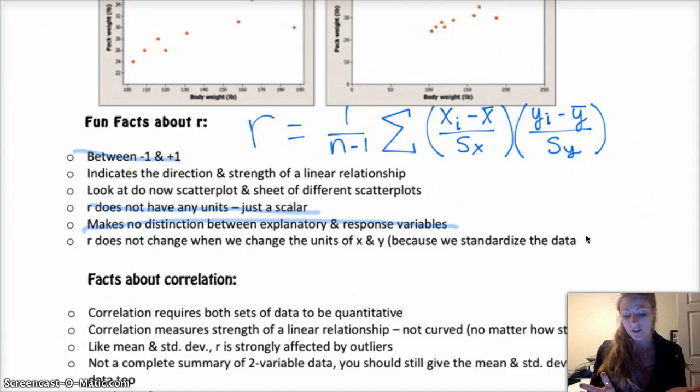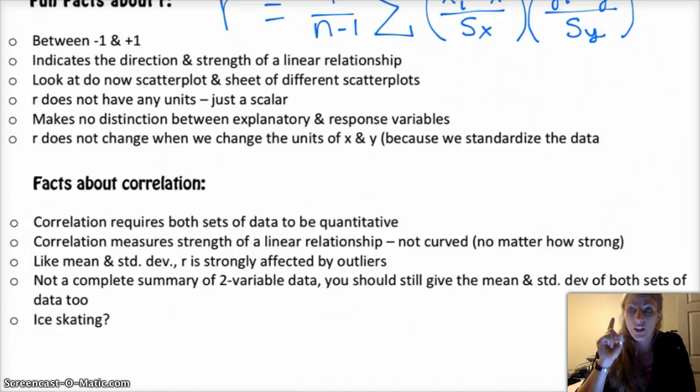r does not change when it would change the units of x and y. So, like, if you were to multiply every x value by a number, you wouldn't be changing the r value. You could only do correlation for quantitative data, measure the strength of a linear relationship, not curved. It is strongly affected by outliers.